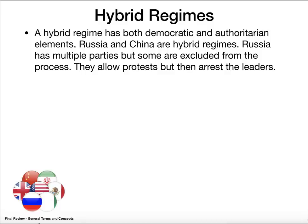Hybrid regimes are ones that are both democratic and authoritarian — they have elements of both. Two examples would be Russia and China: countries that are somewhat democratic because they do hold elections, but their governments are also authoritarian.